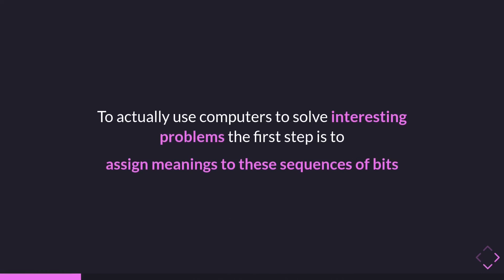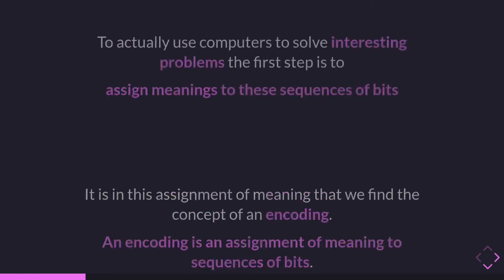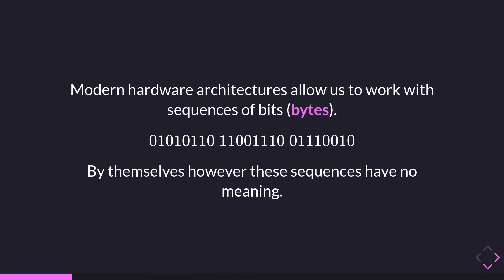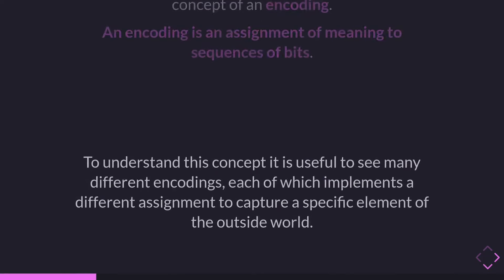The power of computer science is in the assignment of meaning. The first step is to have hardware that allows us to work with sequences of bytes. The next, more theoretical step is: how do we assign meaning to these sequences of bits? It is in this assignment of meaning that we find the concept of an encoding — one of the most important concepts in computer science.